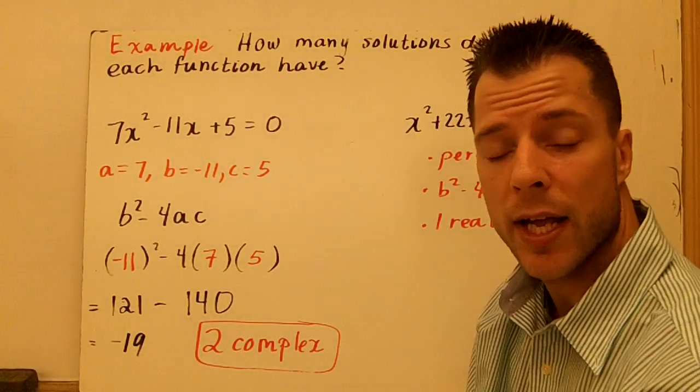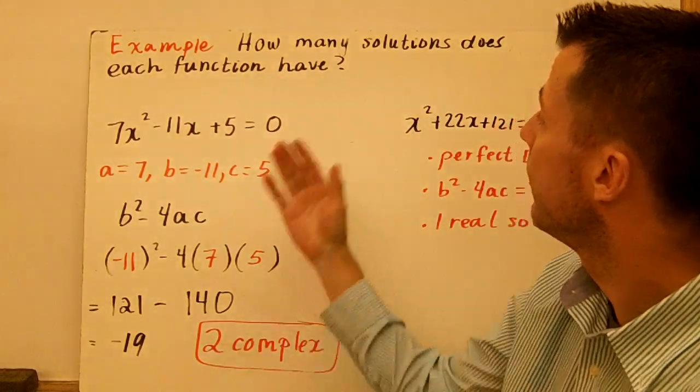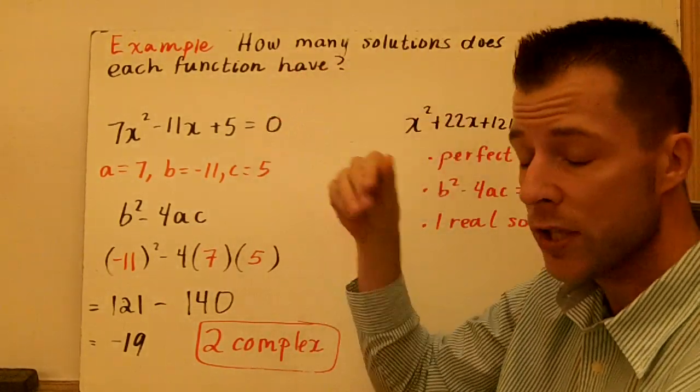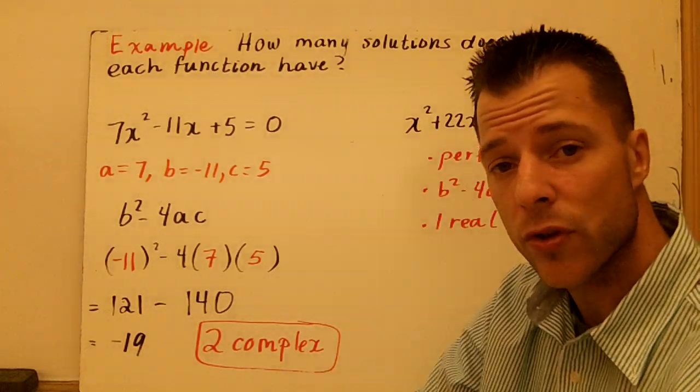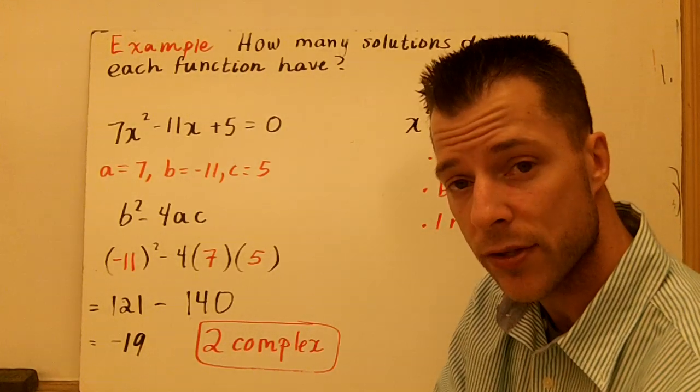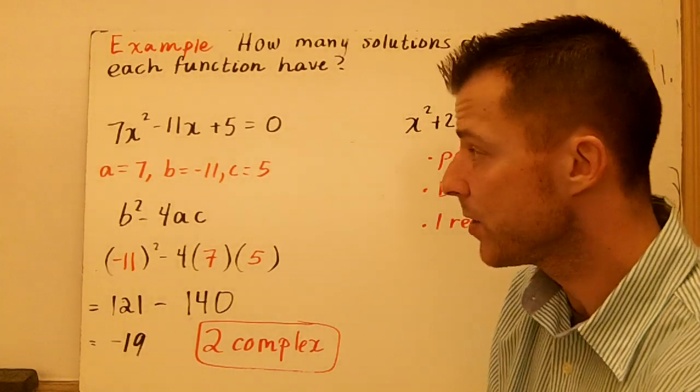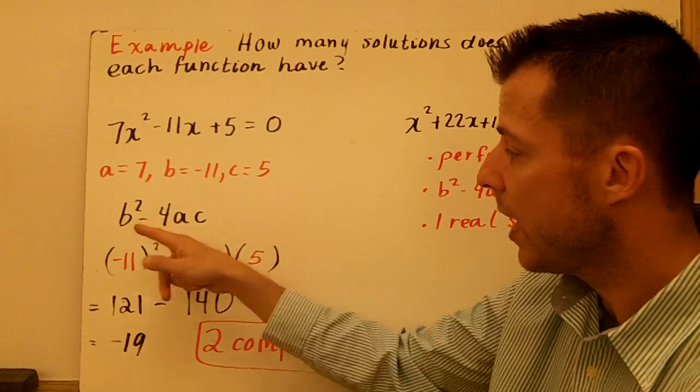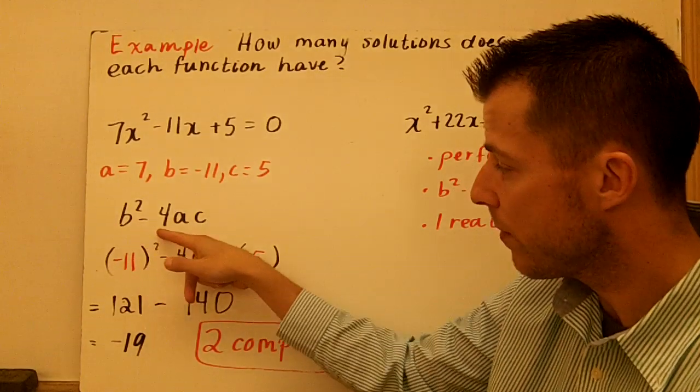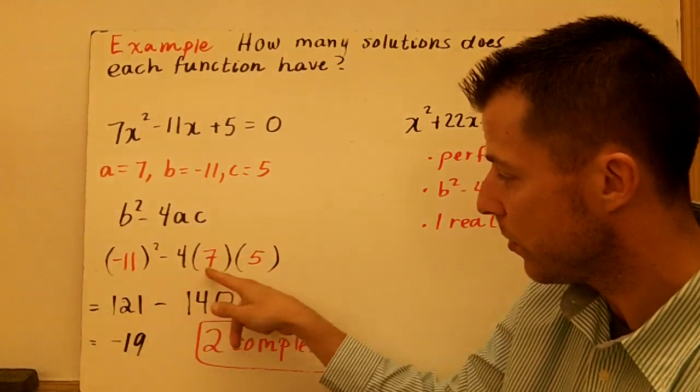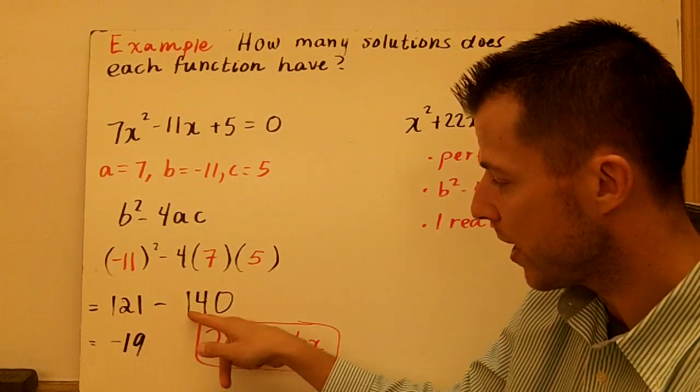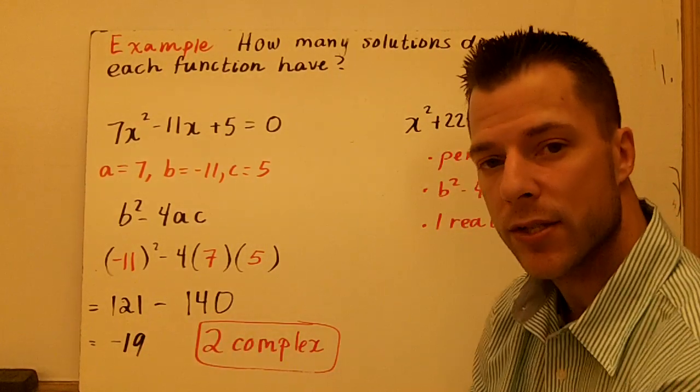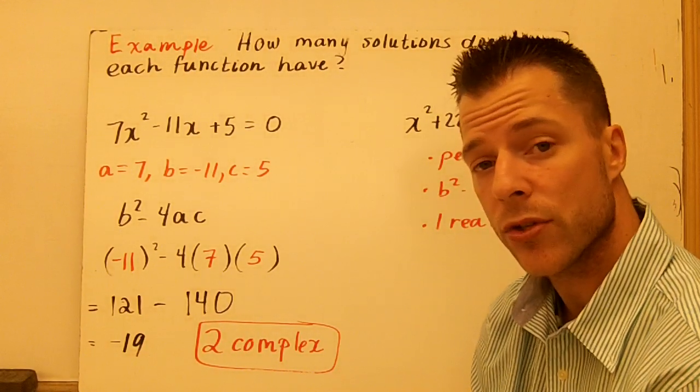Like I said at the beginning, lastly, we have looking at the discriminant. This is specifically how many solutions each function has. Remember, the discriminant will not tell you the solutions, only how many are possible. If I look at the first example here, I identify A, B, and C. My discriminant, remember, is B squared minus 4AC. So I substitute and simplify: 121 minus 140 is negative 19. So I'm going to have two complex solutions. I don't know what they are, I just know there's going to be two.